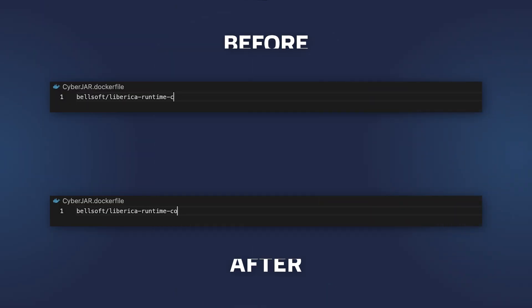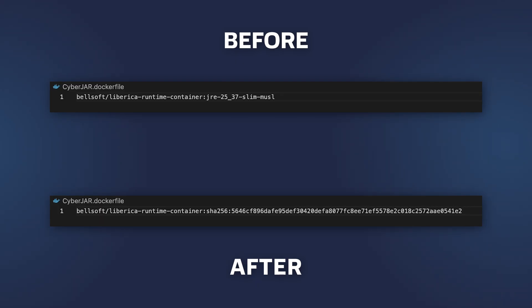Aim for deterministic container images. Deterministic means that given the same input, the build produces the exact same bytes. This way you can detect tampering or dependency changes between build runs. Pin everything to achieve determinism — toolchain, build system, OS version. Also, pin the base image by digest, not by tag, because tags can drift. But the digest always points to the image that you used in the first place.